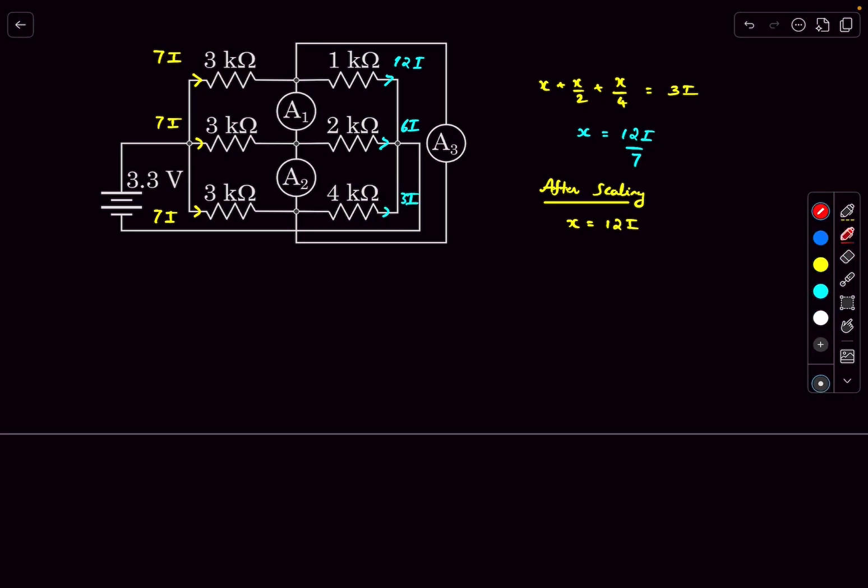These are the currents that are passing through the resistors. So now let's talk about the ammeters. For the ammeter currents I'm just going to assume three values. I'm going to say the current through ammeter A1 is actually i1 in the upward direction, and the current through ammeter A2 is i2 in the upward direction.